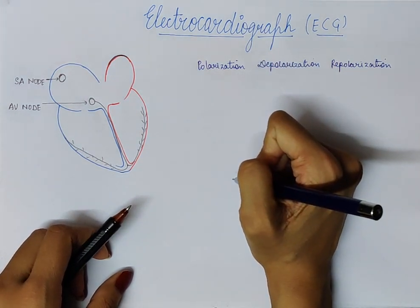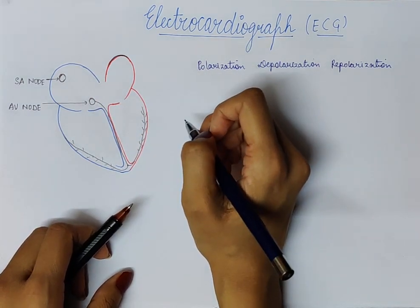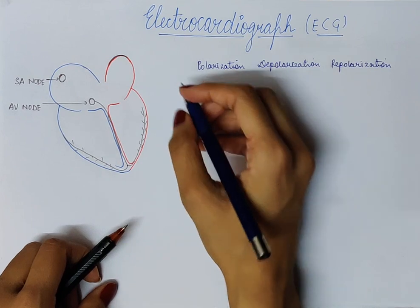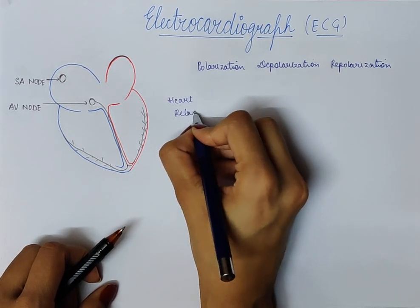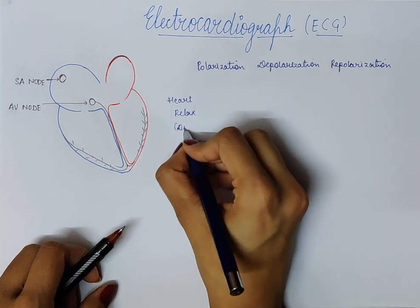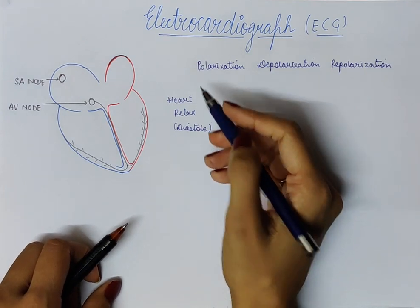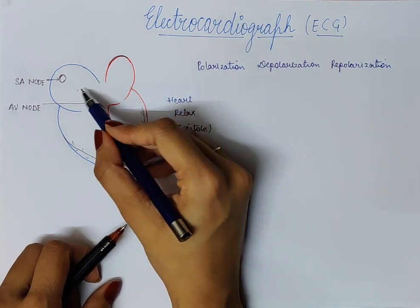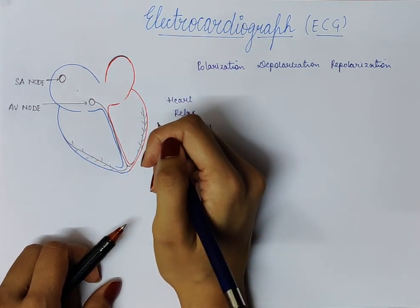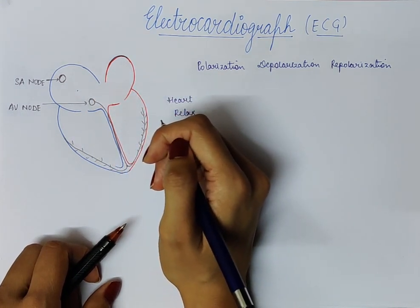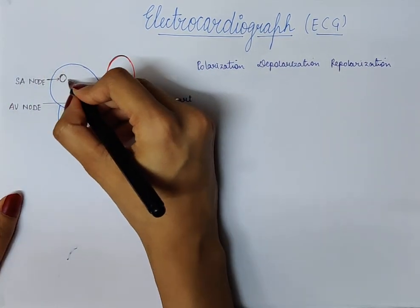I hope you have seen my previous video and you know about SA node and AV node. In the beginning, our heart is in a relaxed condition — that is, it is in diastole condition, not contracting. First of all, the two atria will start to contract. This contraction is started due to a message given by the SA node.